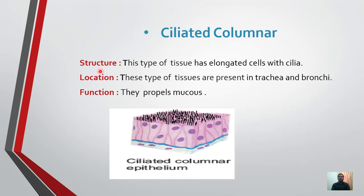Ciliated columnar epithelium. Structure: this type of tissue has elongated cells with cilia. These tissues are present in the trachea and bronchi. Function: they propel mucus — mucus being slimy secretions produced by mucus membranes. In our respiratory tract, air enters through the trachea and bronchi, and ciliated columnar epithelium cells help move mucus along.